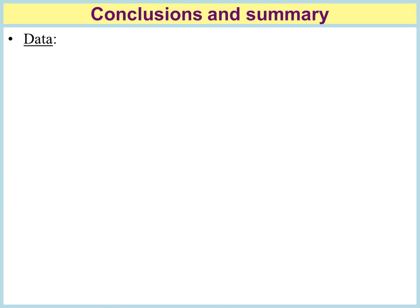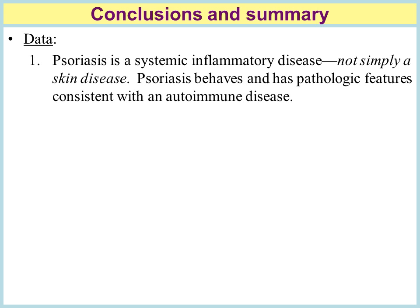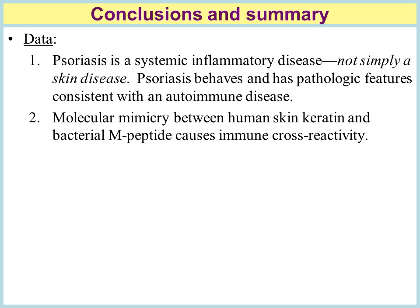The conclusions and summary of this brief three-article review: First, psoriasis is a systemic inflammatory disease — it is not simply a skin disease — and psoriasis behaves and has pathologic features consistent with an autoimmune disease. Second, molecular mimicry between human skin keratin and bacterial M-peptide causes immune cross-reactivity.